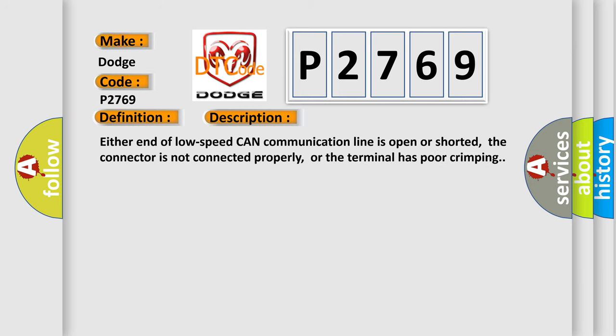And now this is a short description of this DTC code. Either end of low speed CAN communication line is open or shorted, the connector is not connected properly, or the terminal has poor crimping.